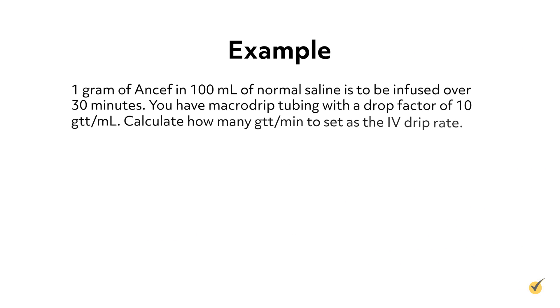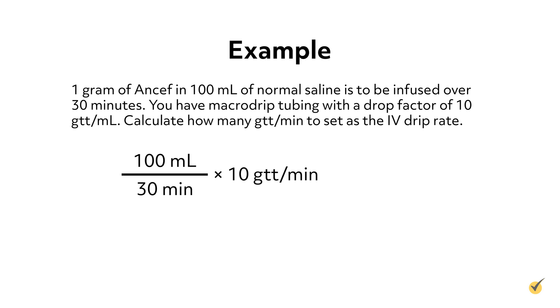Let's look at an example of an IV piggyback medication. One gram of Ancef in 100 milliliters of normal saline is to be infused over 30 minutes. You have macrodrip tubing with a drop factor of 10 drops per milliliter. Calculate how many drops per minute to set as the IV drip rate. Using the formula: 100 milliliters divided by 30 minutes, multiplied by 10 drops per milliliter, equals 33.3, rounded to 33 drops per minute.